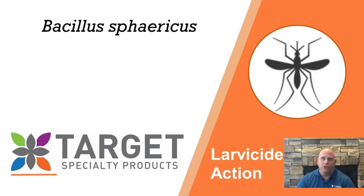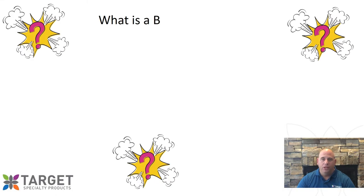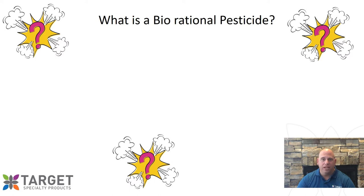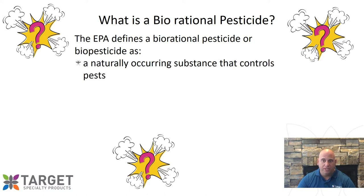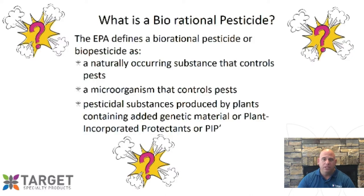Welcome back. Let's get started with the first bio-rational larvicide, Bacillus sphaericus. Your first question might be, what exactly is a bio-rational pesticide? Well, the EPA defines a biopesticide as a pesticide that is a naturally occurring substance that controls pests, a microorganism that controls pests, or a pesticidal substance produced by plants that contain added genetic material — plant incorporated protectants, or PIPs. So in reality, it boils down to any substance or organism that has pesticidal properties — that's a bio-rational pesticide.